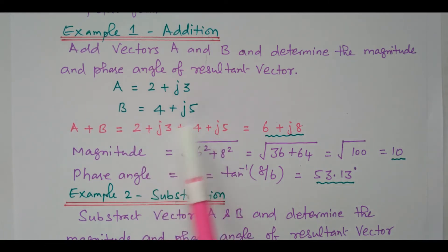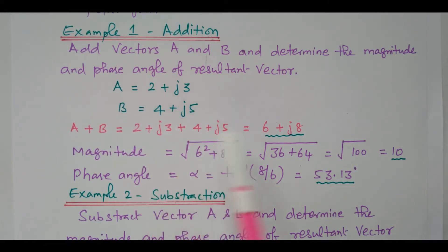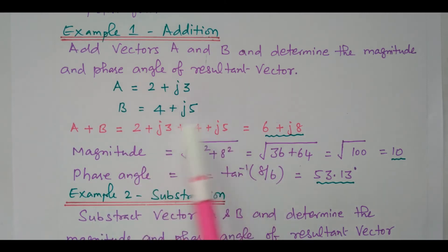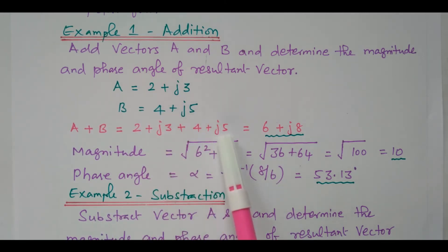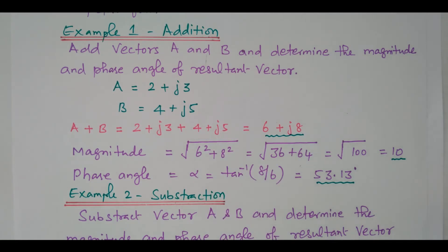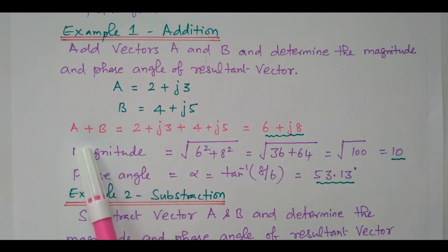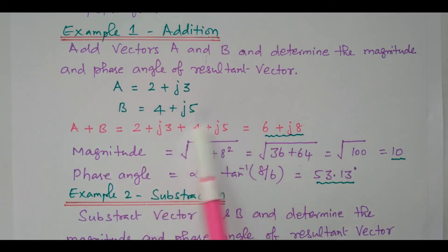So you can easily add 2 plus J3 plus 4 plus J5. We need to add both the real terms: 2 plus 4 equals 6. Both the imaginary terms: J3 plus J5 equals J8. So it is easy to add 2 vectors when they are in rectangular form.